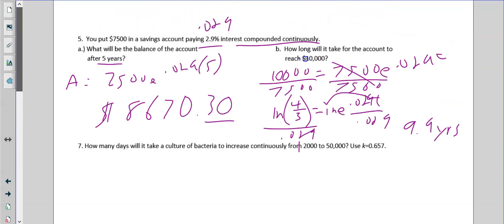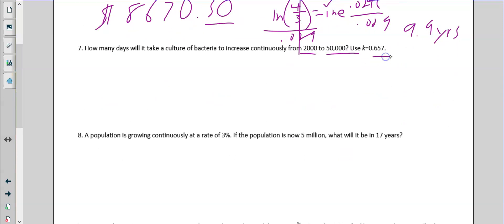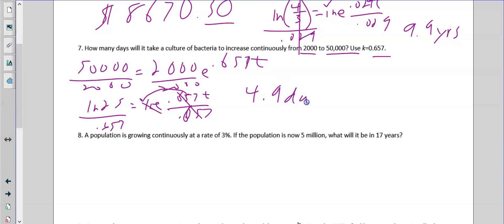How many days will it take a culture to increase continuously from 2000 to 50,000 using this rate? Okay, so 50,000 is the end amount. 2000 is the starting amount. We put our e because it's continuously. We put 0.657. Let me put our t. Same thing. Divided by 2000. So 50,000 divided by 2000 is going to be 25. 6 5 7 t. Again, this is going to get moved down in front. We're going to ln e. That disappears. Ln, I'm skipping steps, 0.657, divide 0.657. That cancels. We type that in the calculator, and we get about 4.9 days right there.